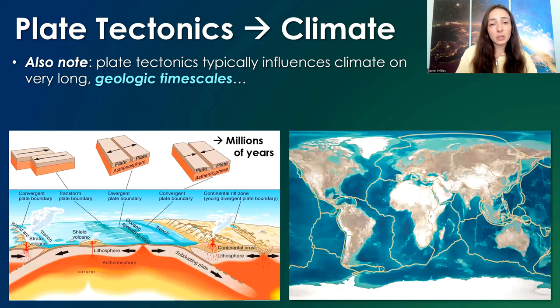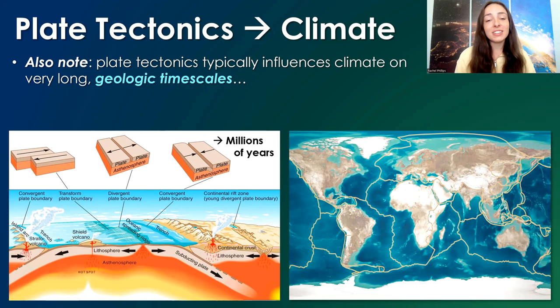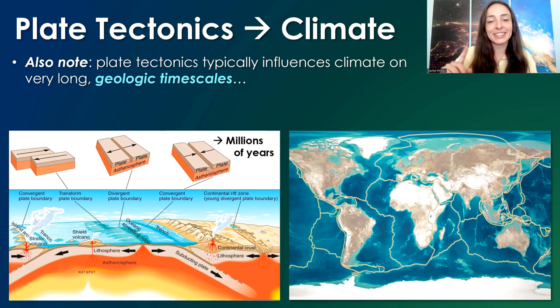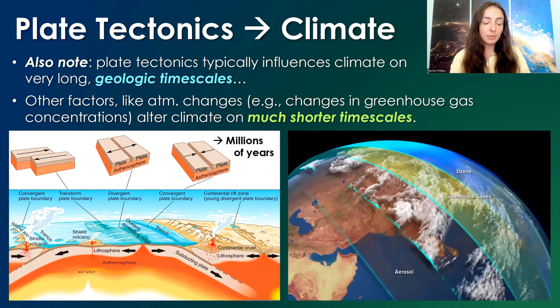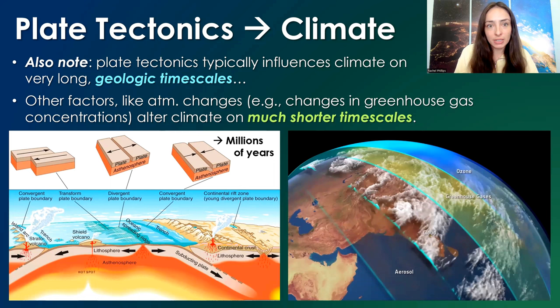Plate tectonics takes a very long time. These plates are moving around very slowly on geologic timescales — not at all close to human timescales. We can actually track the movement of the plates on Earth today, and they're moving maybe like a centimeter per decade. Any significant movement and interaction of plates takes a very long geologic time, which means it causes climate to change on a much longer timescale than other factors that might cause faster-acting effects, such as changes in greenhouse gas concentration or other atmospheric compositional changes.